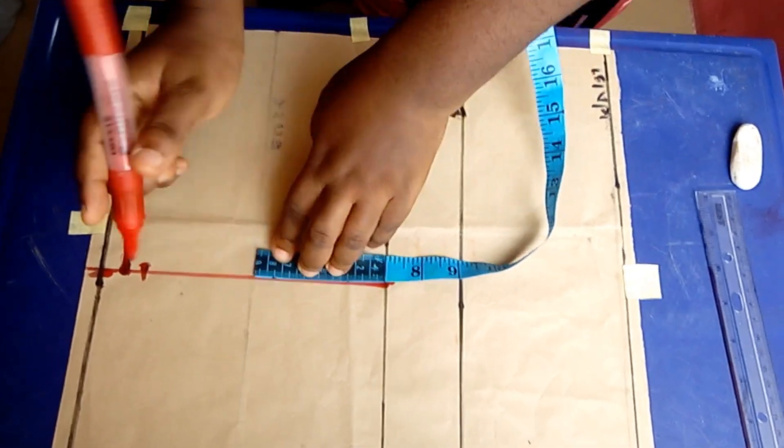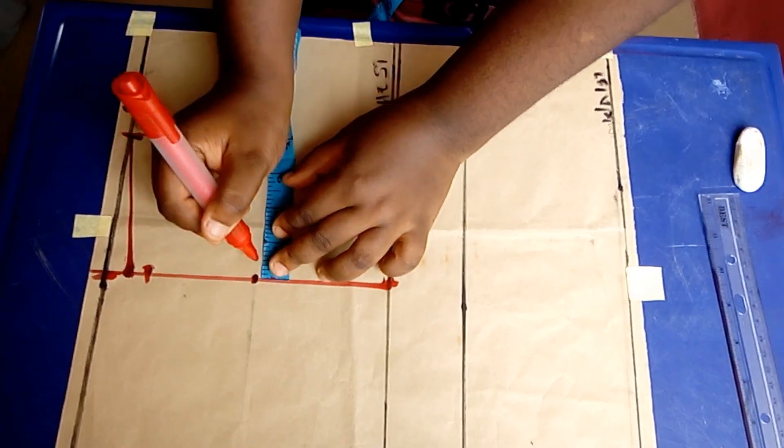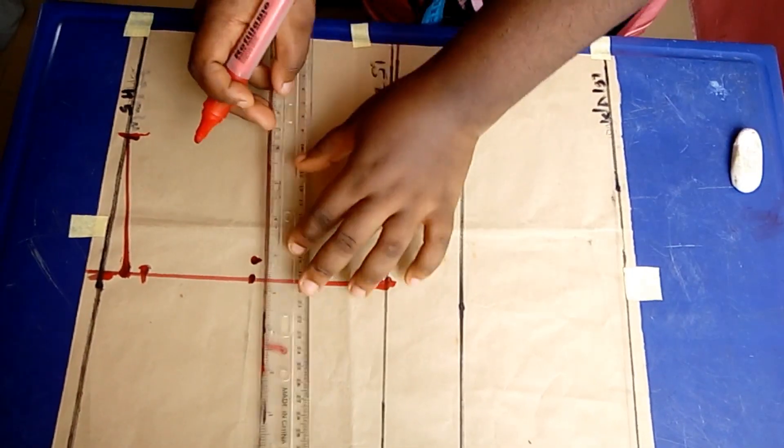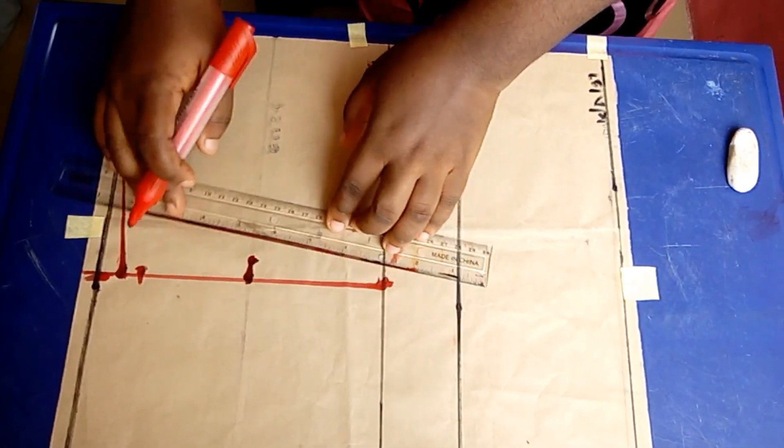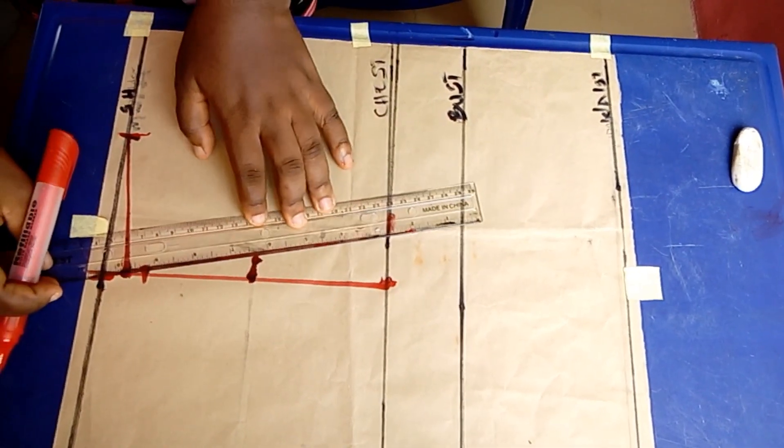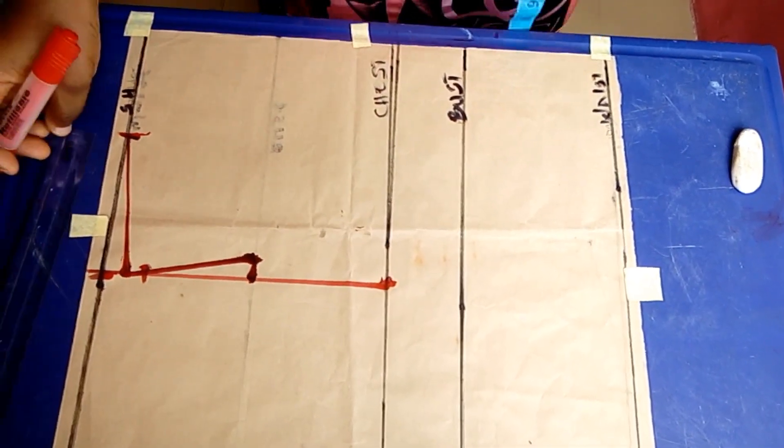Right now I'm dividing the armhole line into two and then I'm going to go in by half inch. This is just to make the front armhole. Then I'll go with my ruler and rule a straight line here.